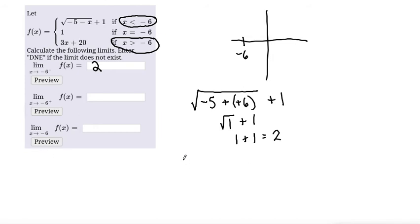For that expression, we would have 3 times -6 plus 20. So simplifying, 3 times -6 is -18 and -18 plus 20 is 2. So that gives us that the limit as x approaches -6 from the right hand side is also 2.